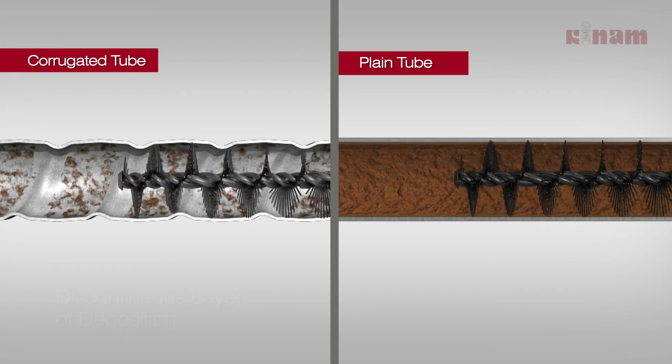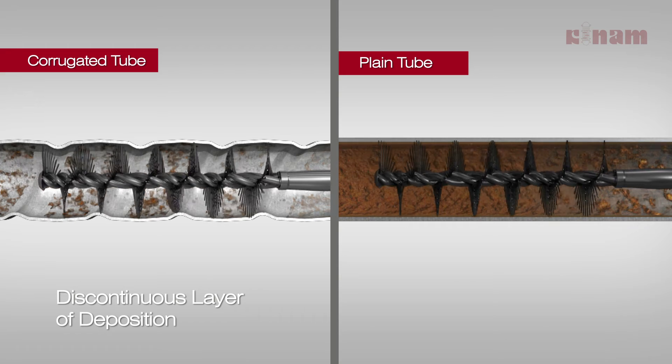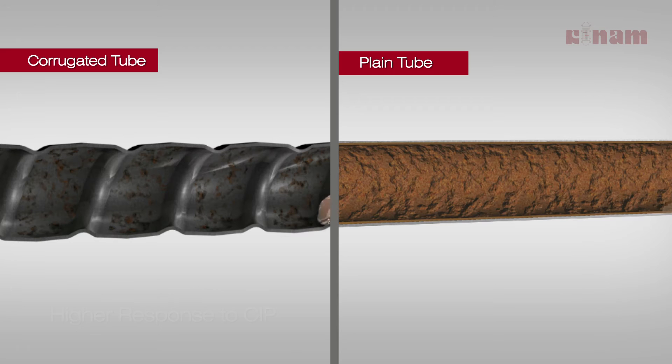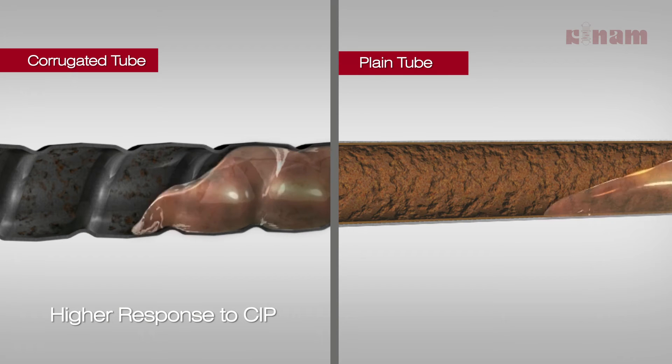The response to CIP cleaning or mechanical cleaning by brush is better in comparison to a plain tube heat exchanger due to the discontinuous layer of deposition.